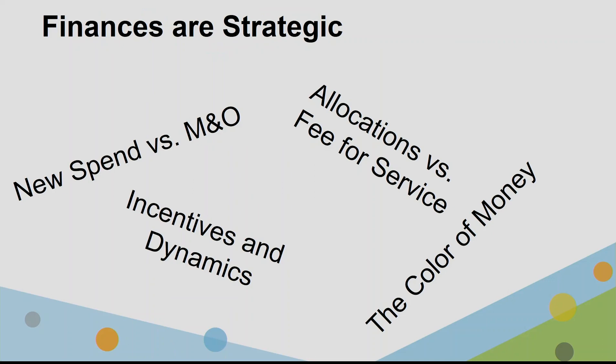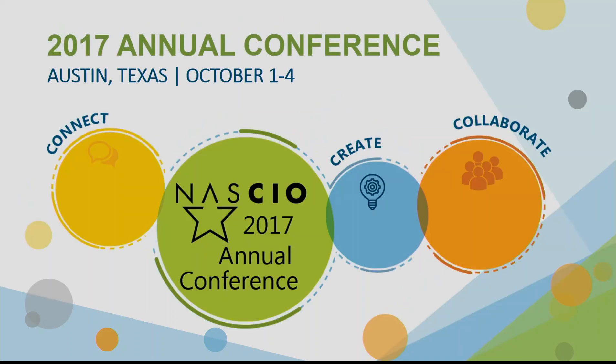The takeaway I want everyone to leave with: finances are strategic. Understanding the dynamics between M&O, new spend, and the color of money is key both for agency success and for answering the question partners ask all the time — how can we help? You can help by understanding those dynamics. Thank you.